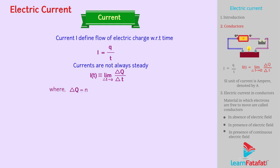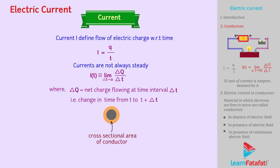Where delta Q is the net charge flowing at time interval delta t, that is, the change in time from t to t plus delta t across the cross-sectional area of the conductor. The SI unit of current is ampere, denoted by capital A.